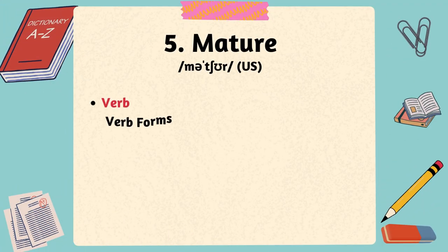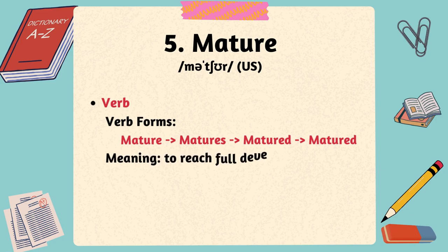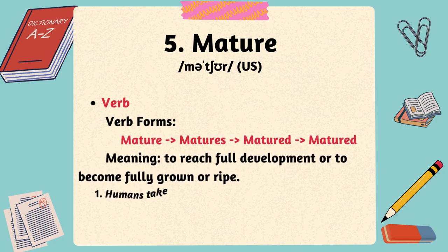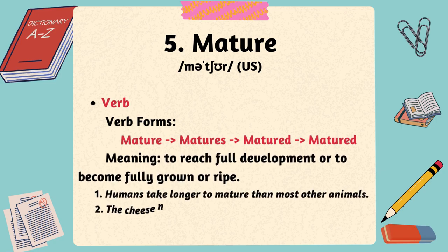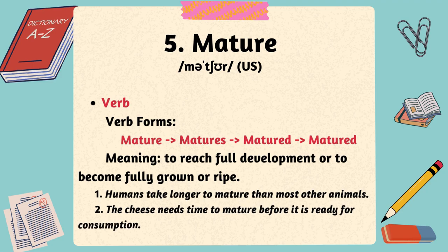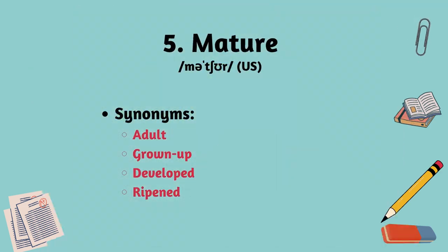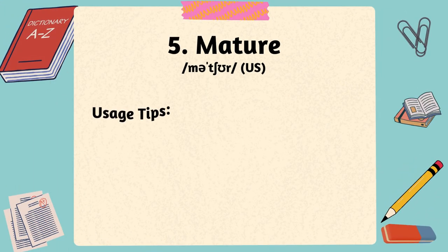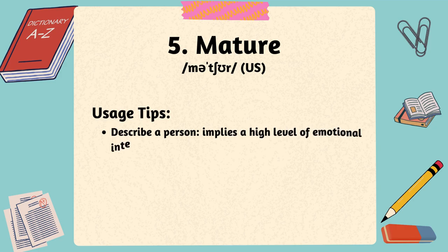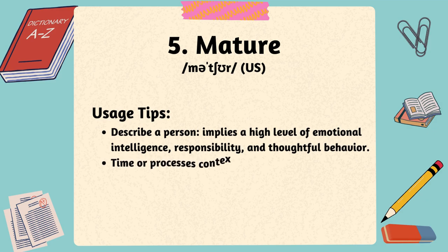As a verb, mature means to reach full development or to become fully grown or ripe. Humans take longer to mature than most other animals. The cheese needs time to mature before it is ready for consumption. Some synonyms for the word mature: adult, grown-up, developed, ripened. When used to describe a person, mature often implies a high level of emotional intelligence, responsibility, and thoughtful behavior. In the context of time or processes, mature indicates reaching a state of completeness or full development.